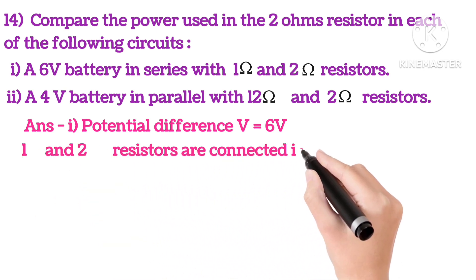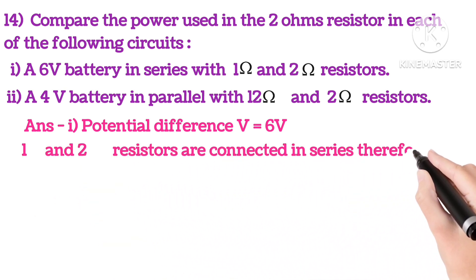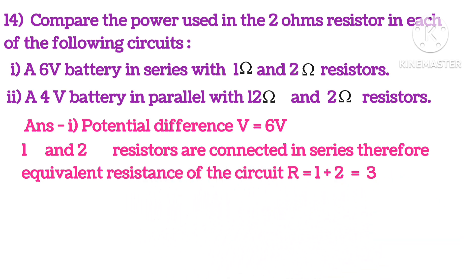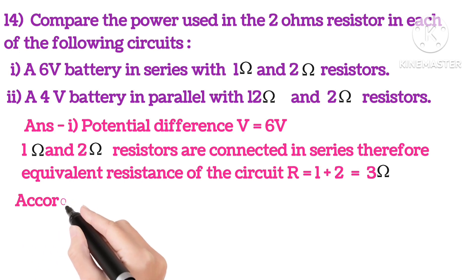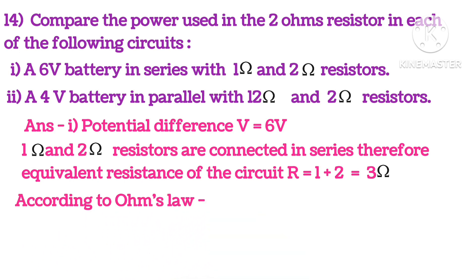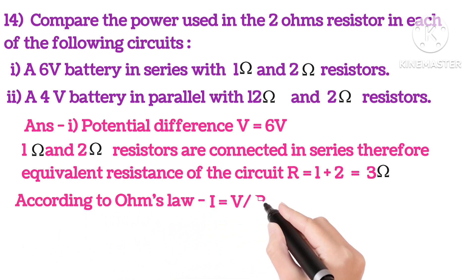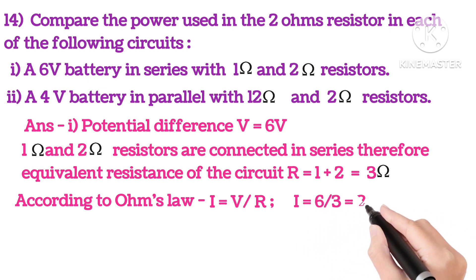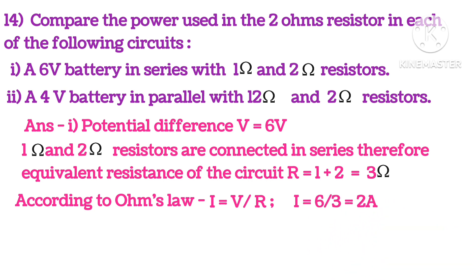1 and 2 ohms resistors are connected in series, so equivalent resistance will be 1 plus 2, that is 3 ohms. Now according to Ohm's law, I equals V upon R. Putting in the values, we get current 2 ampere.